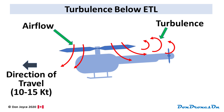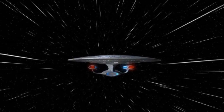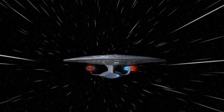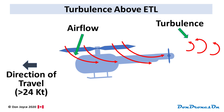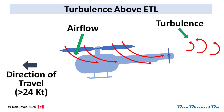But once it breaks through the ETL speed — and that's ETL, not FTL for faster than light — once it breaks through that ETL speed between 16 and 24 knots, the helicopter is basically outrunning its own vortex turbulence and becomes much more efficient.